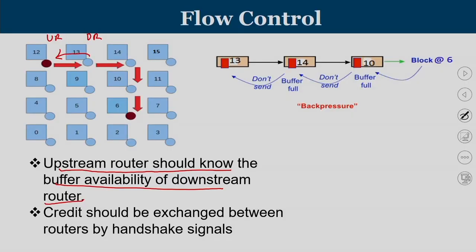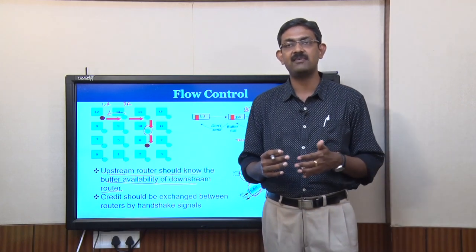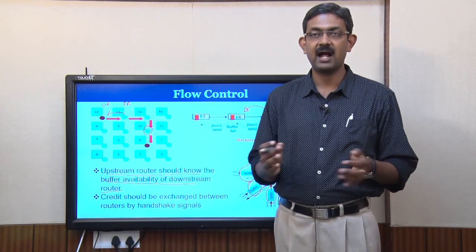Consider the case where router 6's buffer is full. Over a period of time, buffers accumulate in router 10, and eventually router 10 will be full. Router 10 communicates back to router 14 that the buffer is full — don't send. This mechanism is known as back pressure. Every router has a set of buffers at its input. Packets reside there, and based on whether there is a buffer available in the next router, we ensure smooth flow of packets. Flow control is a technique that facilitates smooth packet flow through proper handshaking between adjacent routers.